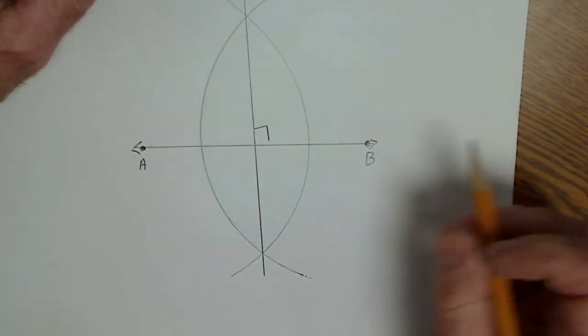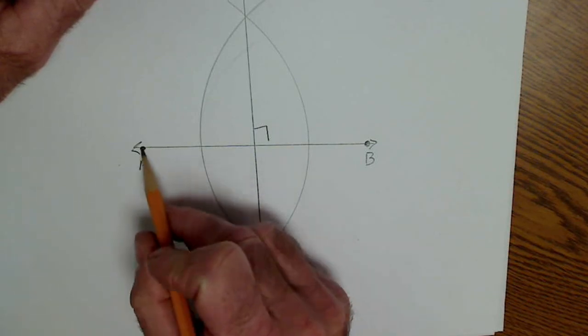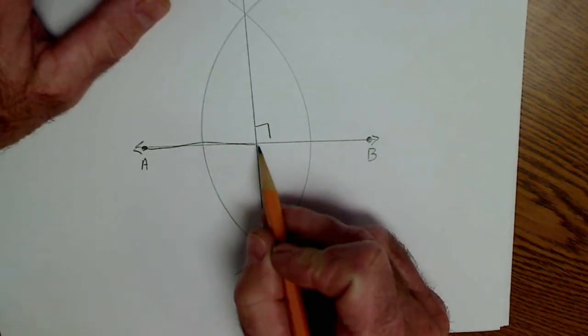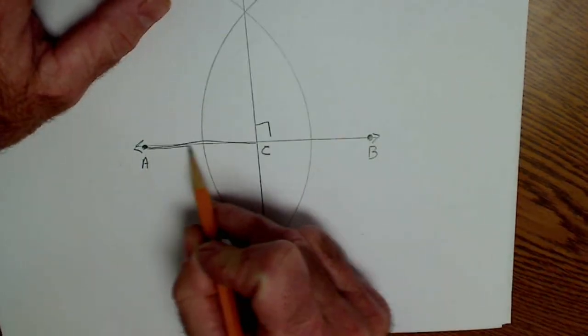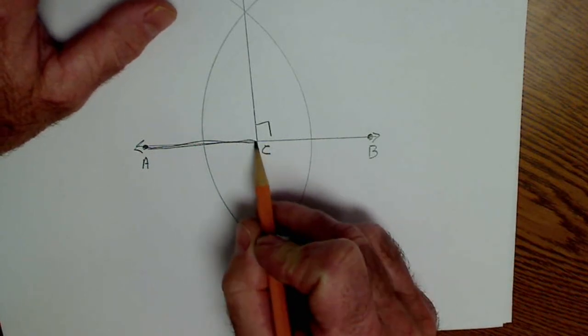Perpendicular means at a right angle. Bisector meaning that this line segment AC is the same length as segment CB.